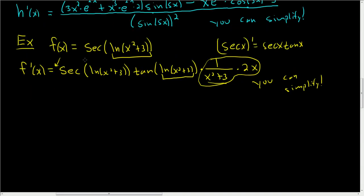Just to go over that one more time: the derivative of secant is secant tangent, so we have secant tangent. Then multiply by the derivative of the inside — the derivative of ln x is 1 over x, so it's 1 over that stuff, times the derivative of the inside again, which is 2x.